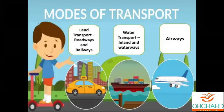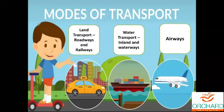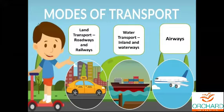Next we are going to see the different modes of transport — land transport, water transport, and air transport. You have all been learning about this from the first standard. In land transport we have both roadways and railways. Road and rail transport were developed after the invention of the steam and internal combustion engines in the 18th century and early 19th centuries.